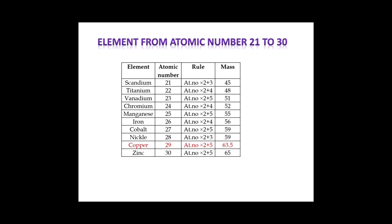In order to get the mass number, you have to multiply the atomic number by 2 then add the respective code. For example, scandium has atomic number 21 — multiply by 2 to get 42, then add the scandium code number which is 3, so the mass number of scandium is 45.